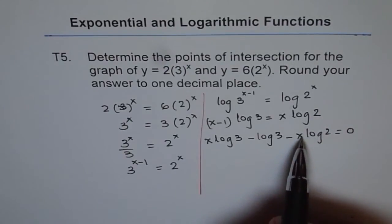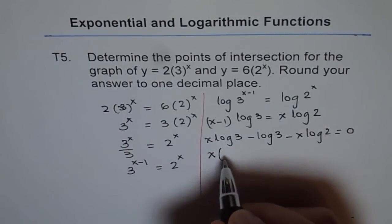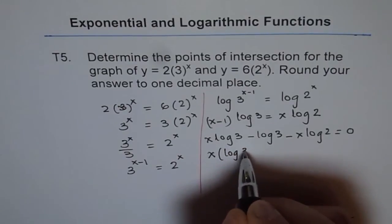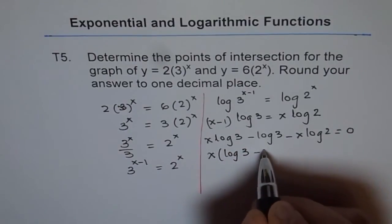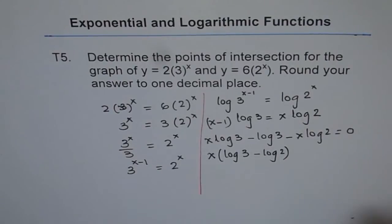Now we can combine the x terms together. So we get x times the quantity log 3 minus log 2. We are combining these two terms together.